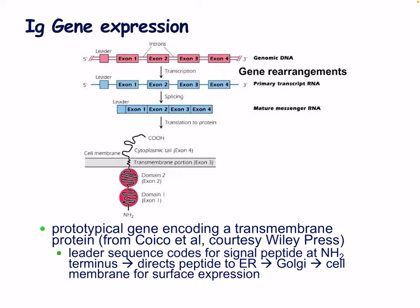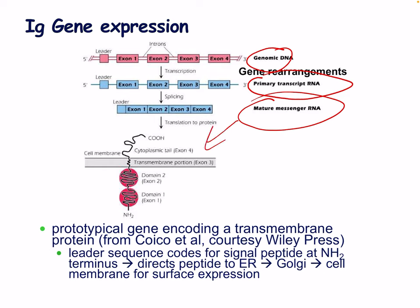In immunoglobulin gene expression, we go from genomic DNA to primary transcript RNA to mature messenger RNA, followed by translation into protein. A prototypical gene encoding a transmembrane protein includes a leader sequence coding for a signal peptide at the NH2 terminus, which directs the peptide to the endoplasmic reticulum, then to the Golgi apparatus, and then to the cell membrane for surface expression.